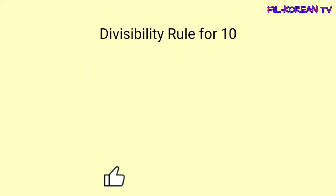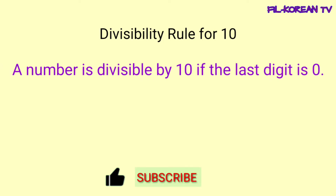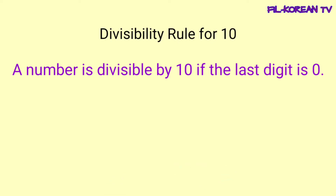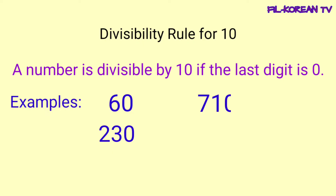Alamin naman natin ang divisibility rule for 10. A number is divisible by 10 if the last digit is 0. Ang isang number ay divisible by 10 kapag ito ay nagtatapos sa 0. Examples: 60, 230, 710, and 590. Ang mga ito ay nagtatapos sa 0 kaya divisible ito ng 10. At tandaan, kapag ang number ay hindi nagtatapos sa 0, syempre hindi rin sya divisible by 10.